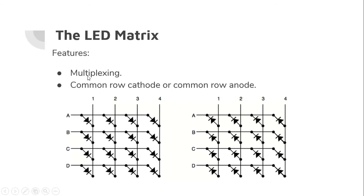Moving on now we reach the LED matrix. So the main features are multiplexing, which is creating a mesh of the rows and the columns. And there are two types of LED matrices, basically the common row cathode and the common row anode.